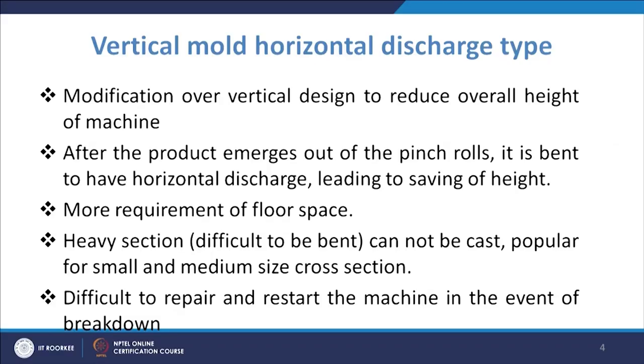The product is taken from the shop floor, and it is relatively easier to handle when you have horizontal movement or horizontal discharge — you can use a crane, load it, or send it to other sections. You can directly load it on a horizontal platform. In the earlier vertical case you need more vertical space, but in this case the product is bent and becomes horizontal, so you will have a larger horizontal space requirement.